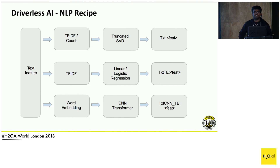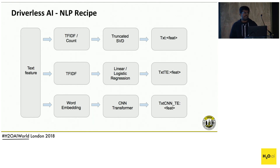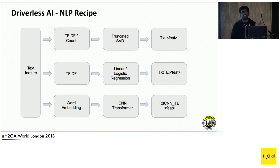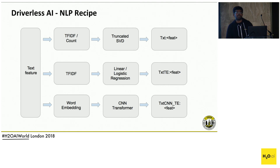The third set of features is word embedding-based features. We learn the word embeddings from the input corpus that is given, and apply a CNN classifier on top of that. This is again done in a K-fold cross-validation manner, and we get TXT CNN-based features from this.